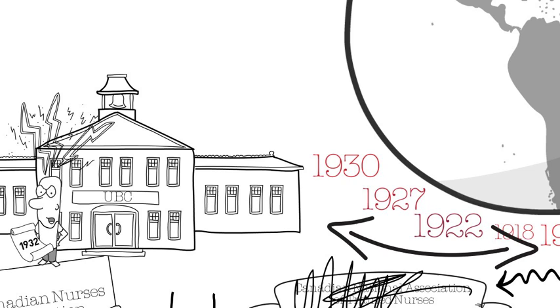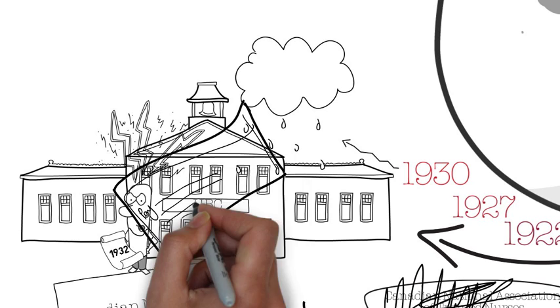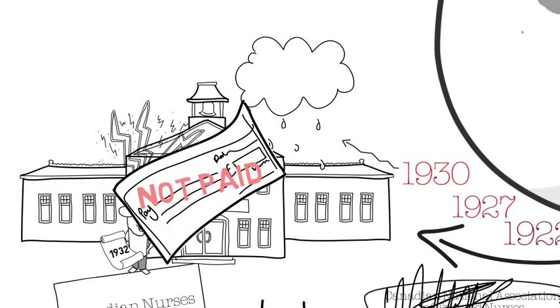The Great Depression in the 1930s had a dramatic effect on healthcare. People could no longer afford to pay their medical bills, and this brought unemployment and poor working conditions for nurses. Also at this time, there were approximately 330 nursing schools spread across Canada.